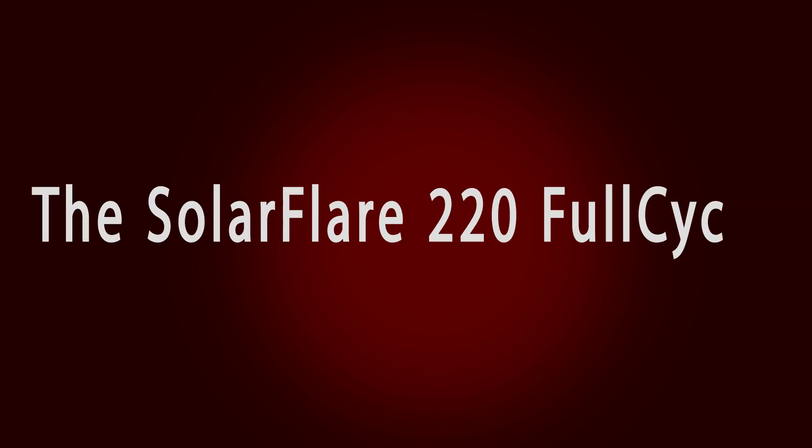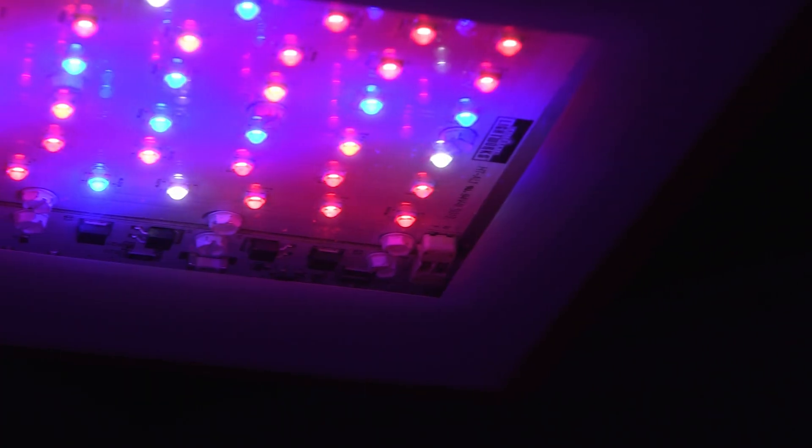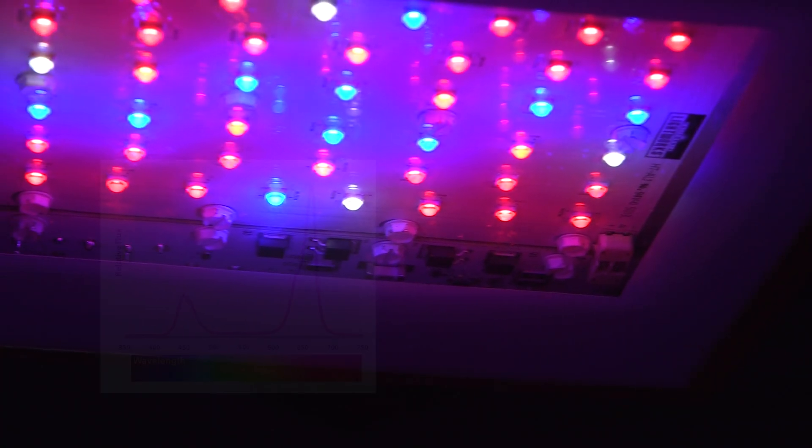The Solar Flare 220 comes in three spectral blends. The Solar Flare 220 Full Cycle. This version is designed to be used through the entire grow cycle. It is optimized for both veg and bloom.